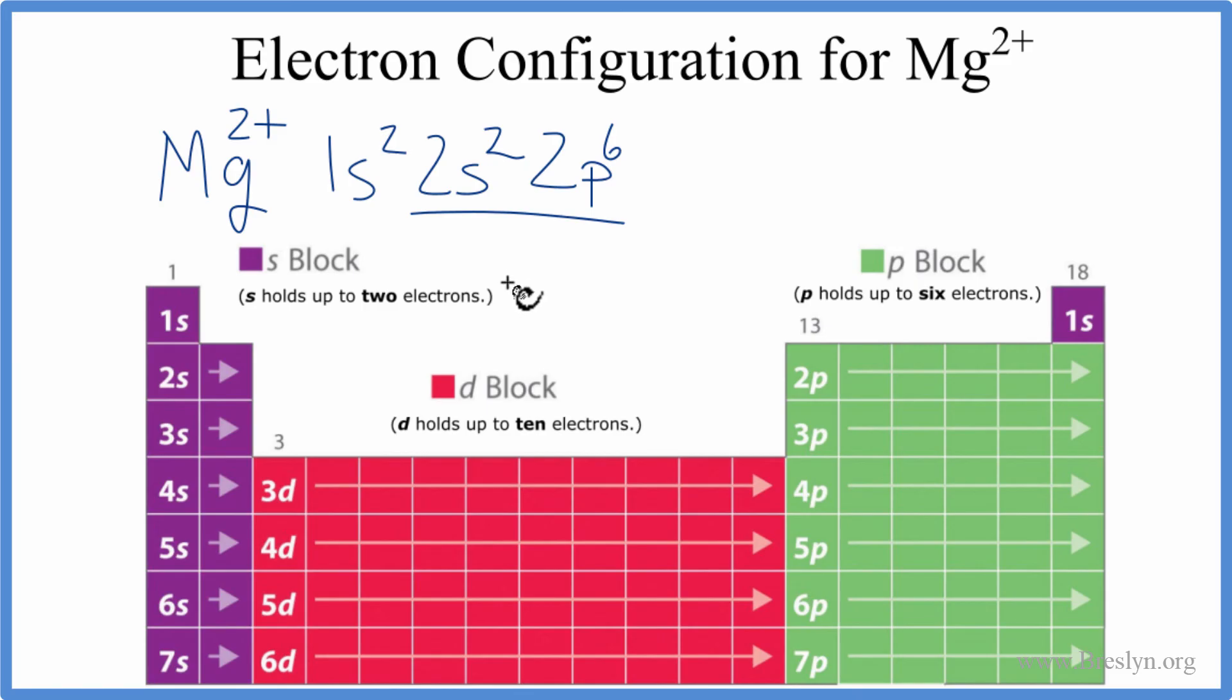So that's it. The electron configuration for Mg2+, 1s2, 2s2, 2p6. This is Dr. B. And thanks for watching.